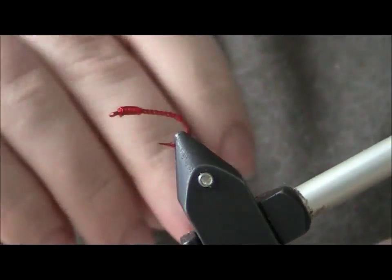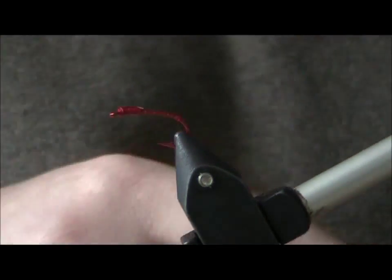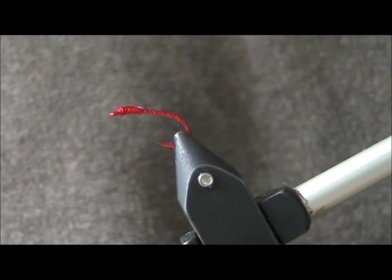But yeah, that's the general idea. We're using the actual color of the hook shank as part of the fly. You're buying painted hooks. It's really a shame to waste the hook shank, the color of it.